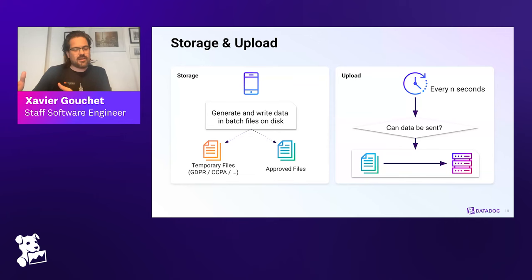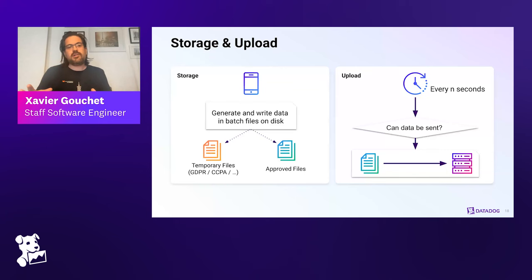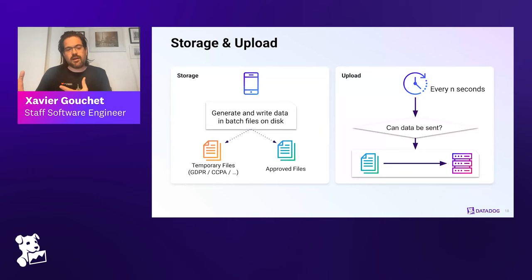When we write, we have a way to write files either in a temporary folder — when we don't yet know about the tracking consent in terms of GDPR, CCPA, and other privacy laws — we keep them in a pending folder. Once consent has been given and we know the data can be sent to Datadog, it's moved to an approved folder. This storage part is separated from both data collection and upload. The upload lives in a different thread, and every N seconds that thread looks for data to send — only from the approved folder — and if there is network, it sends things to the Datadog servers.